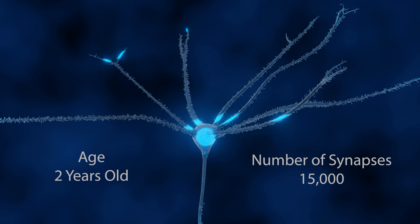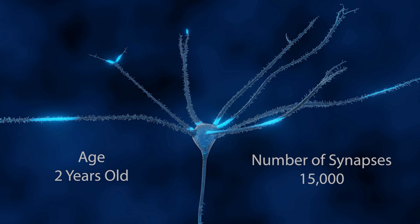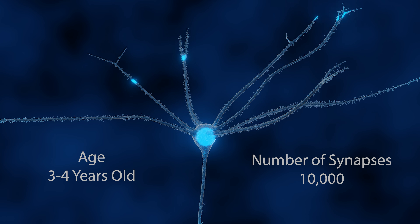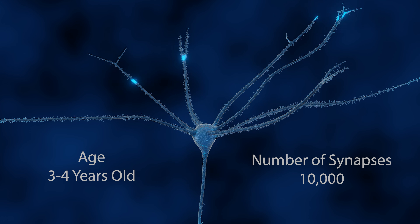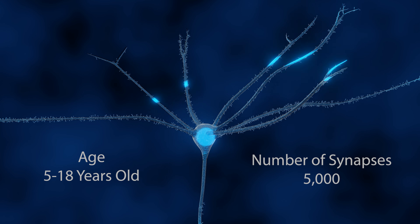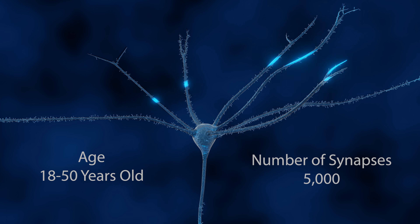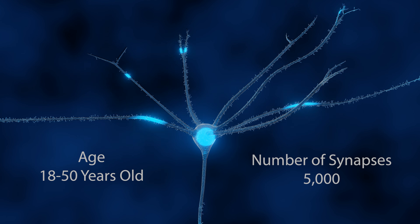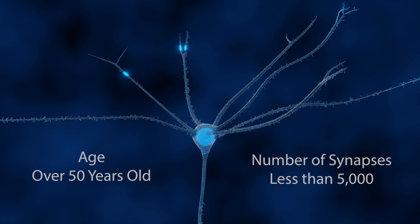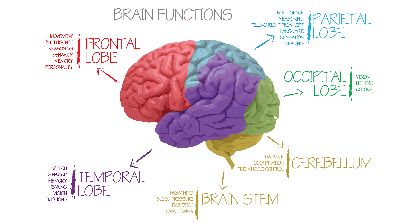At birth, each neuron has around 2,500 synapses. At age 2, this increases and peaks to around 15,000 synapses per neuron. From age 3 to 4, the number reduces to around 10,000. At age 5 to 18, the number slowly reduces to around 5,000. From age 18 to 50, the number of synapses is stable at around 5,000 synapses per neuron. From age 50 onward, there is a gradual decline.